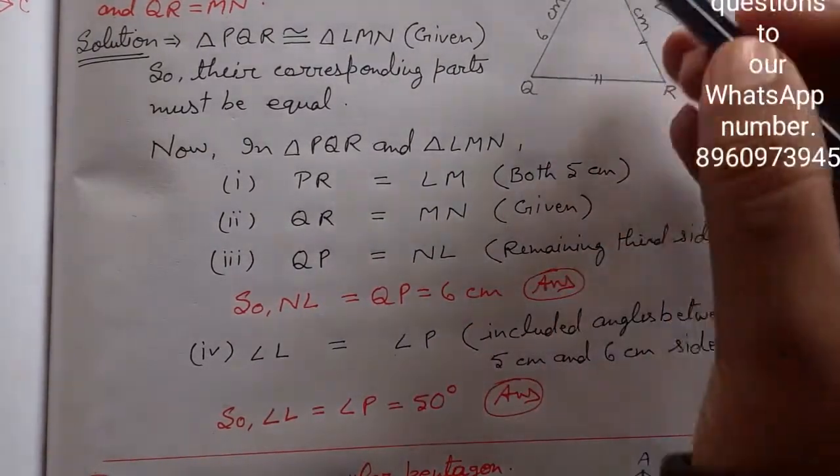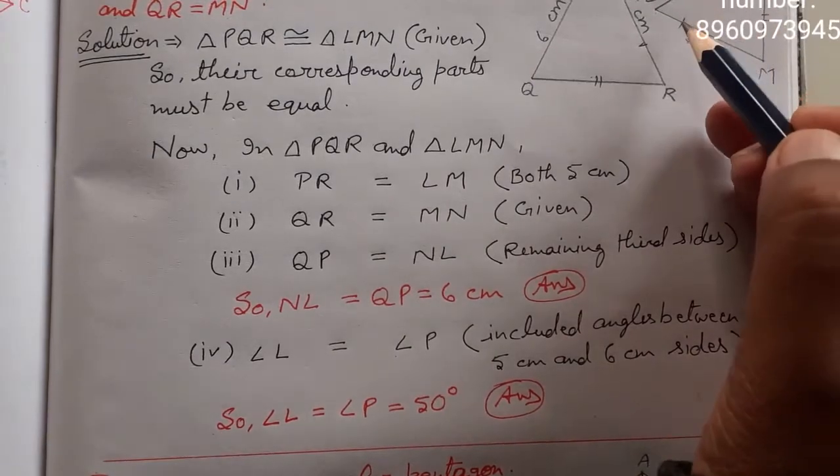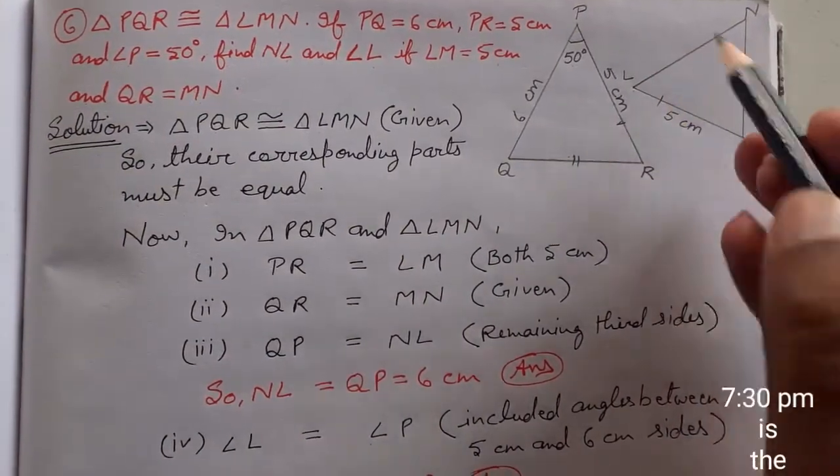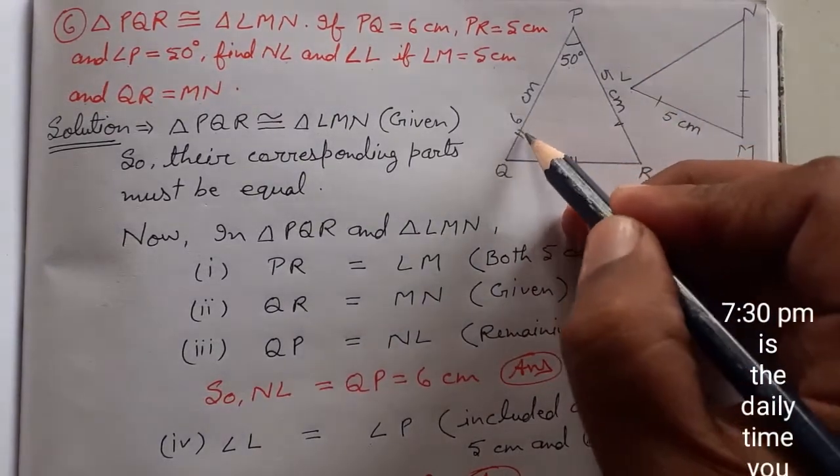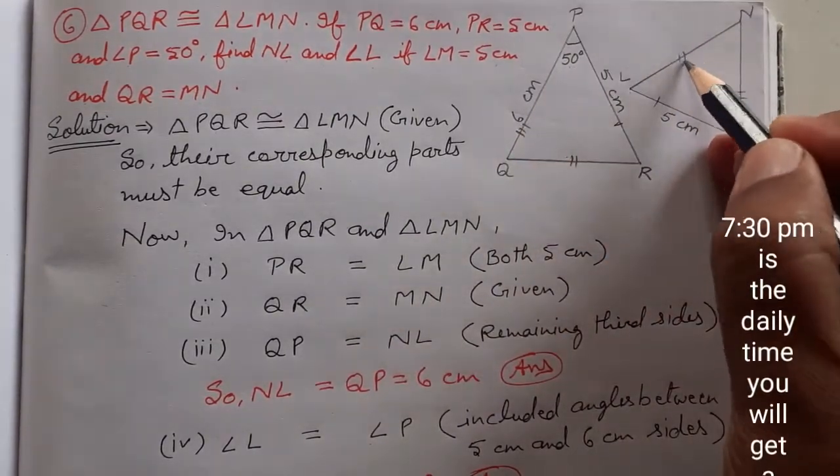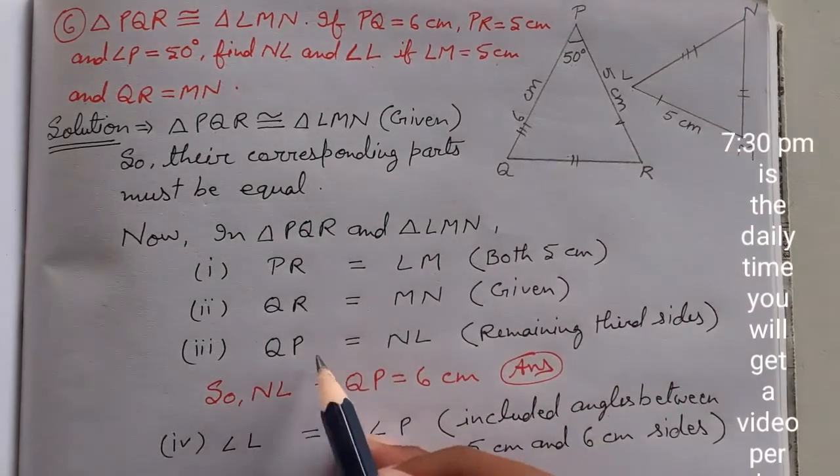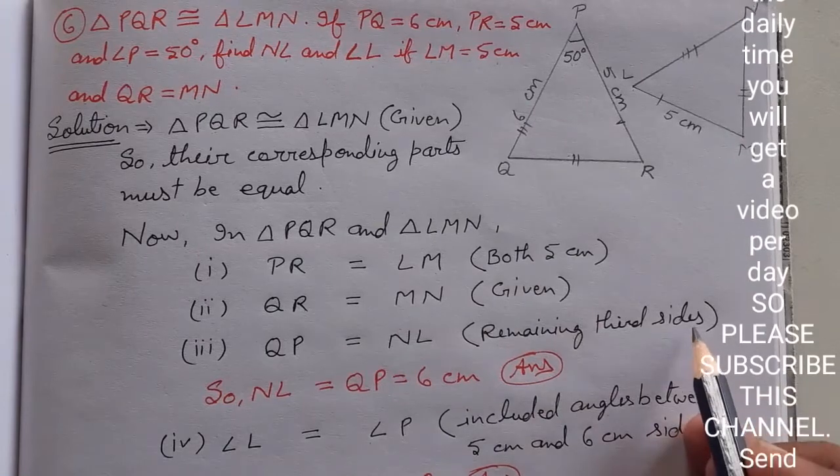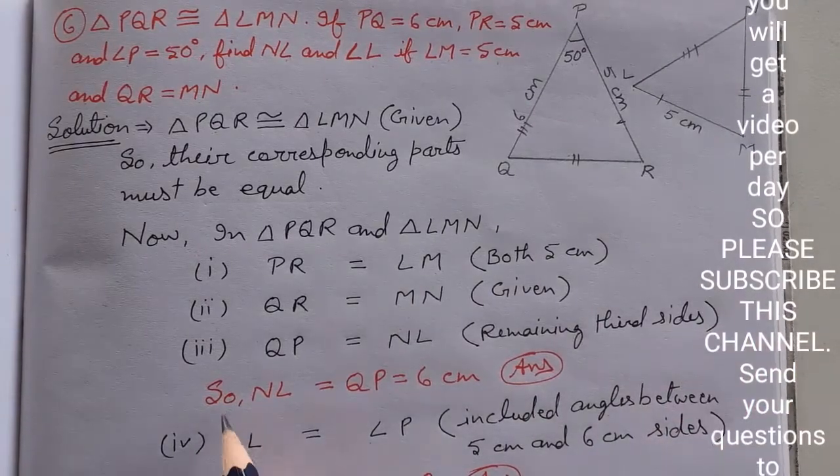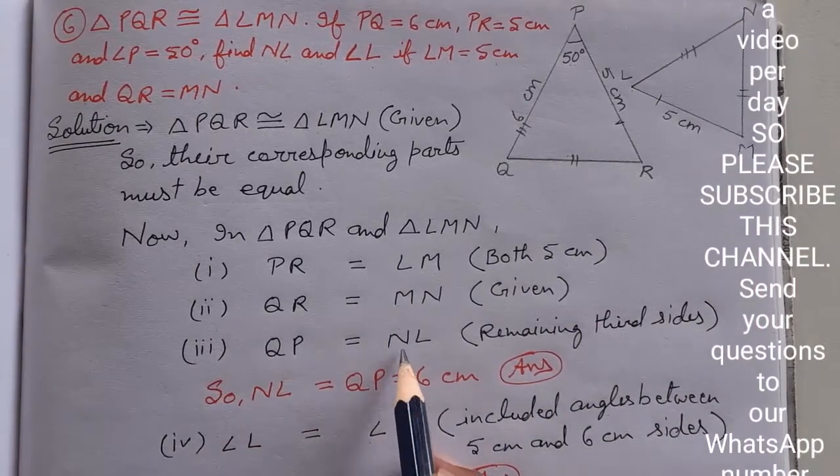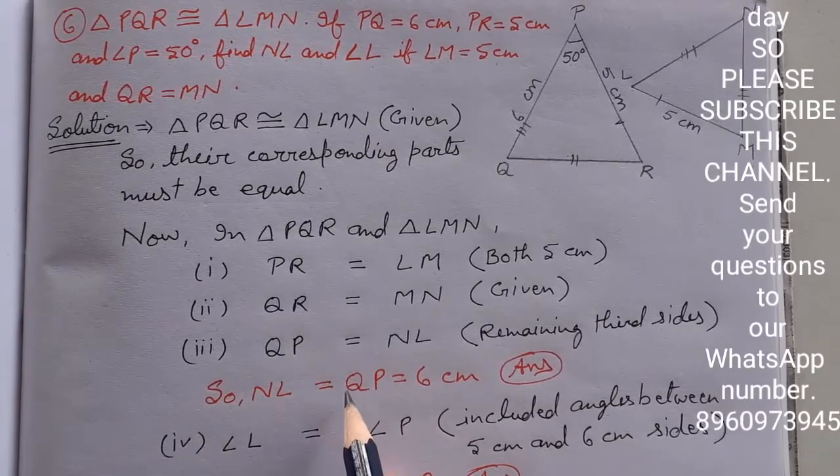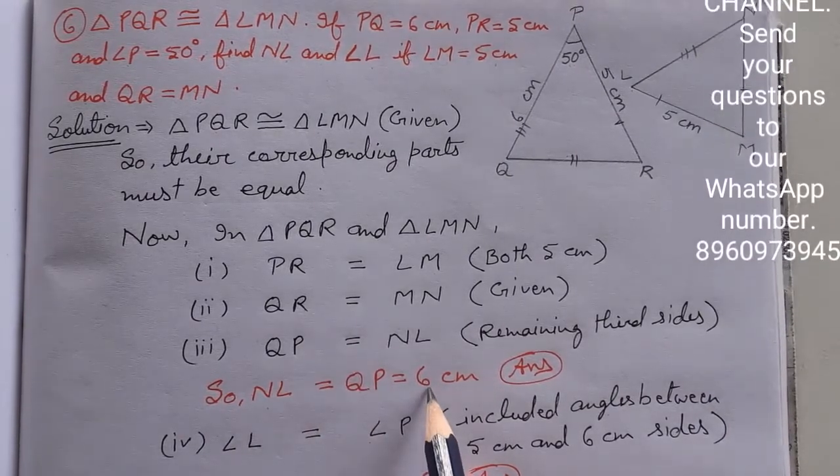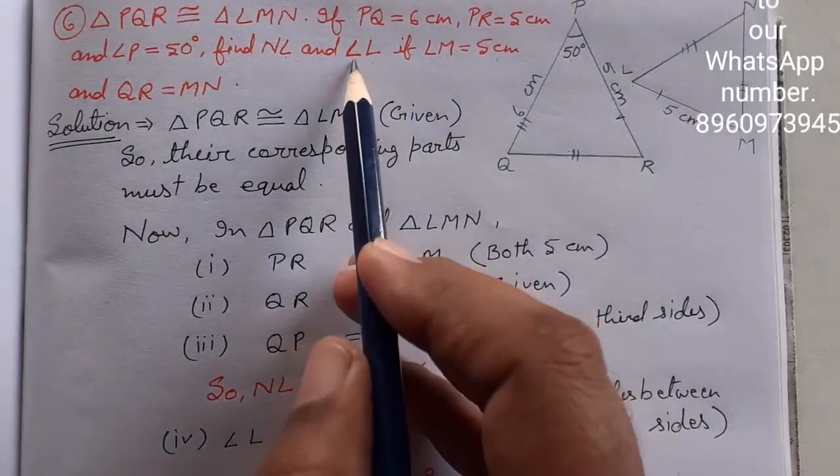The last remaining side is QP, our third side, which will be equivalent to the third side there, which is NL. So NL equals QP because of the remaining third sides. Since QP's value is 6 cm, NL's value will also be 6 cm. This is your first answer.